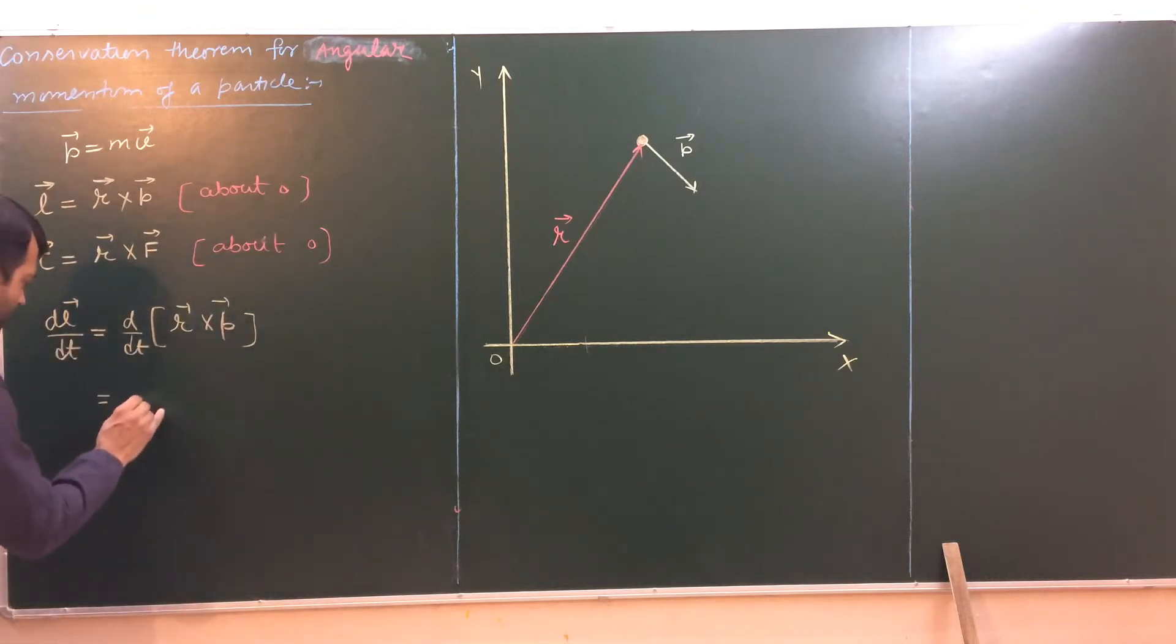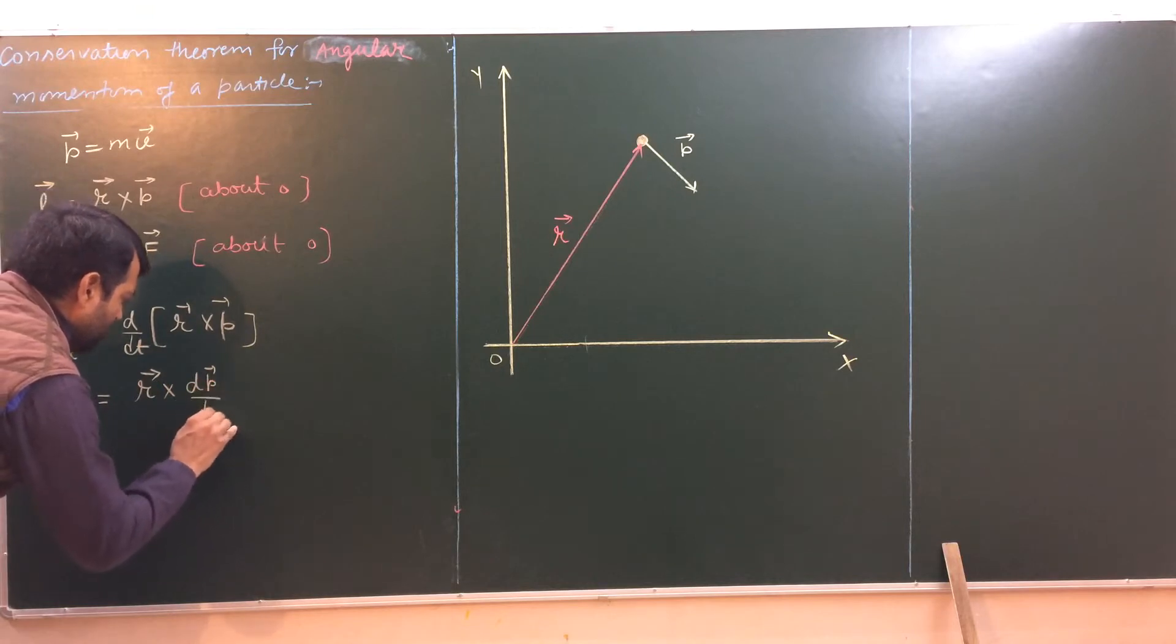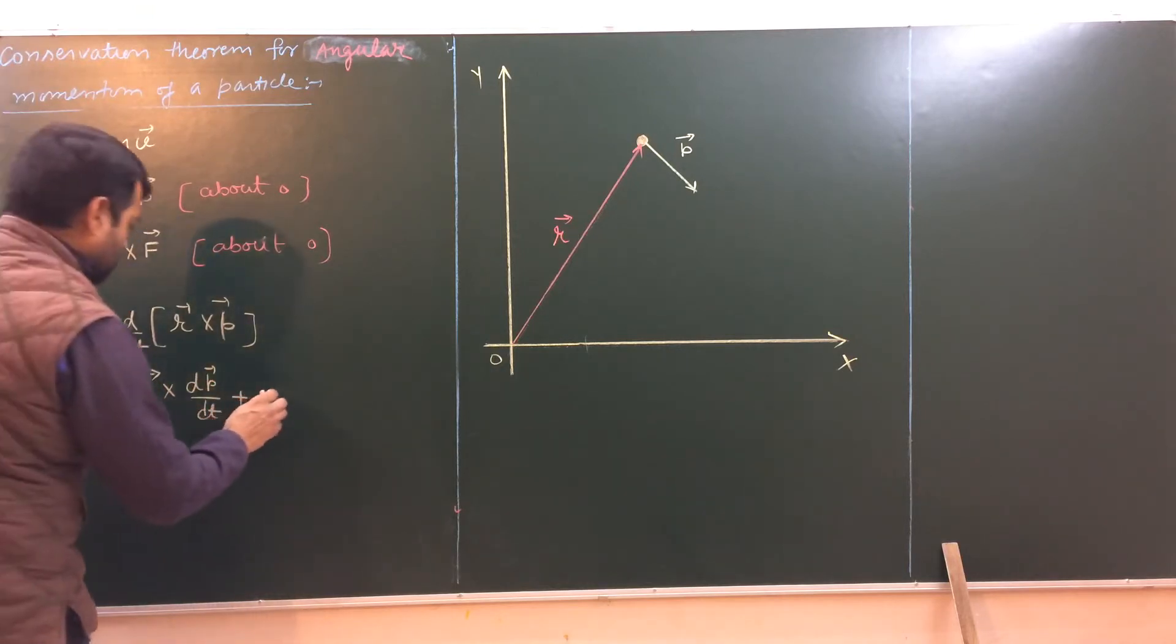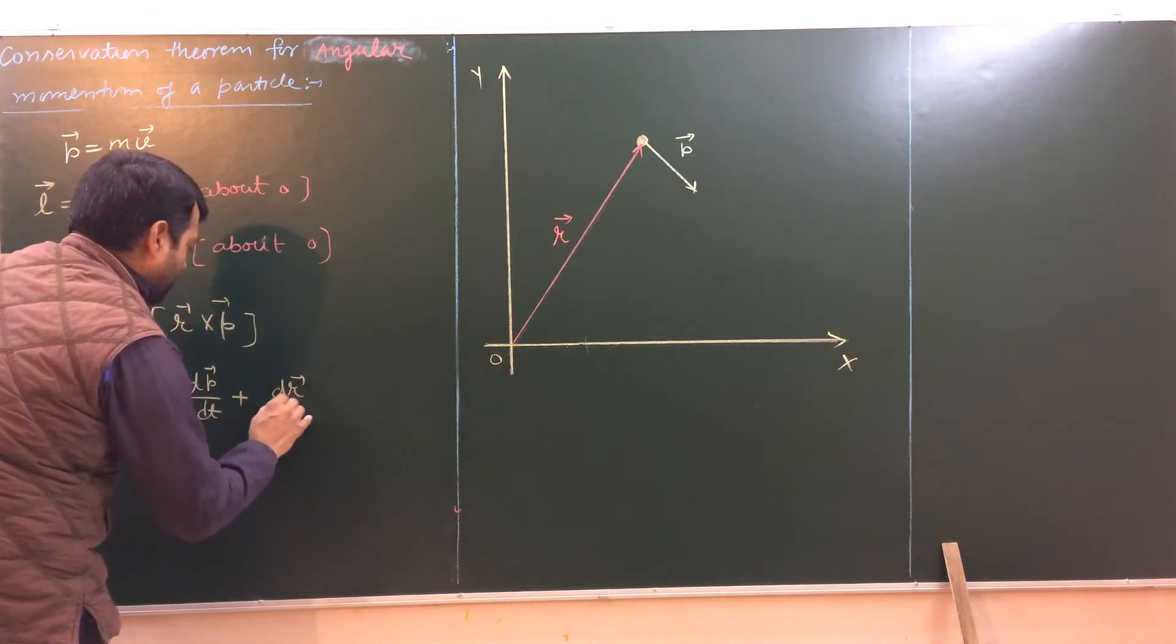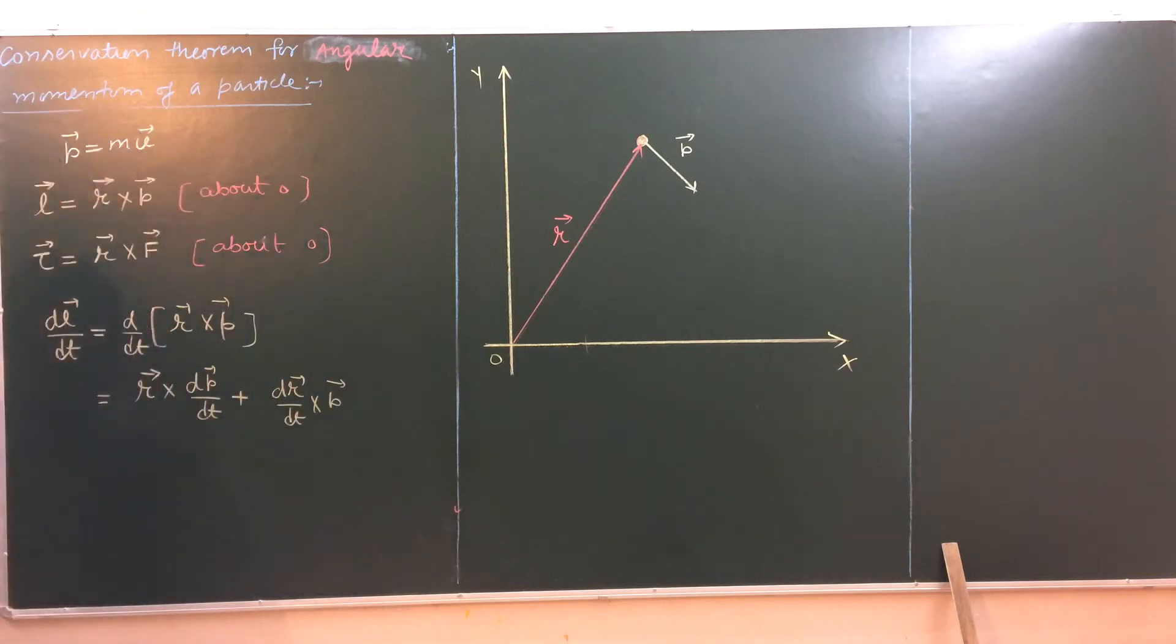I will say the first function r as it is cross the differentiation of p with respect to time plus differentiation of the first function and the cross product in the second function. r cross the force. Rate of change of linear momentum is force plus this is my velocity. Rate of change of displacement is velocity cross the linear momentum.